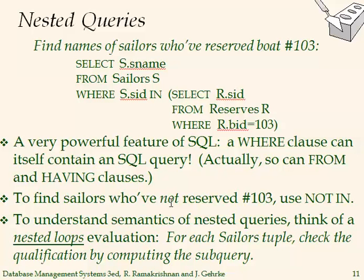Now we're introducing nested queries — a query inside another query. For example, finding sailors who reserved boat 103: we could do a simple join with sailors and reserves, adding a WHERE condition on SID and boat ID 103. But here the approach is: select the name of sailors whose SID is in the set of reservation SIDs for those who reserved boat 103.